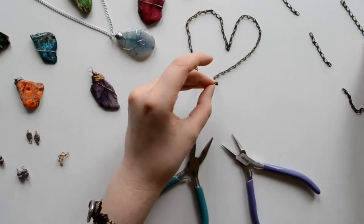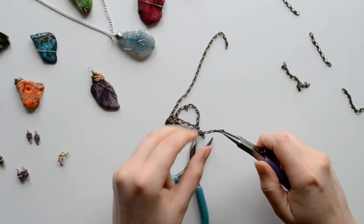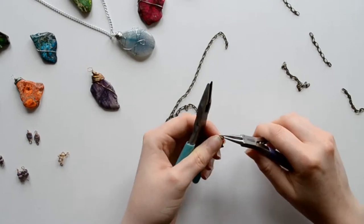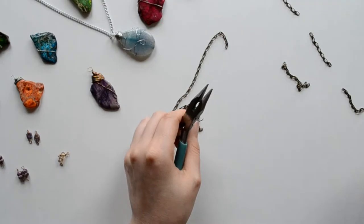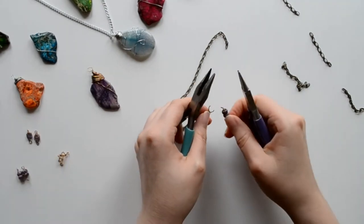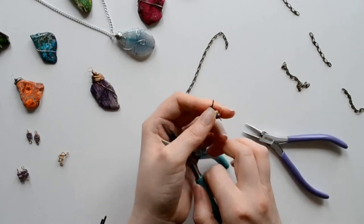Alright, so now we're going to get our chain, our 17-inch one, and we're going to attach our first bead. Just going to open it, and then we're going to put the bead on there, and then close it.